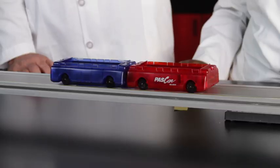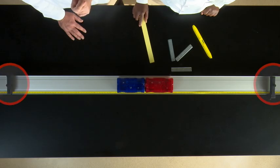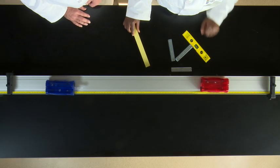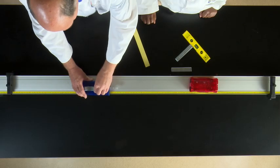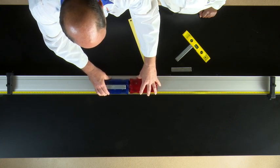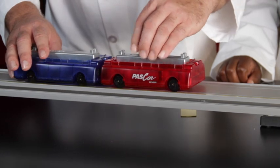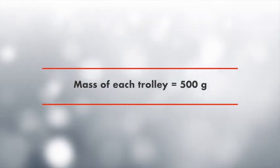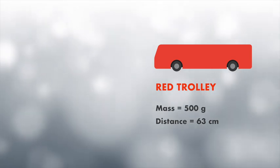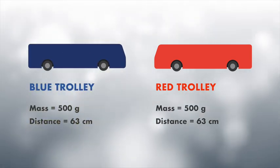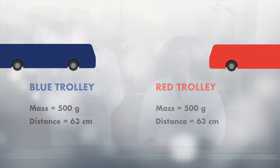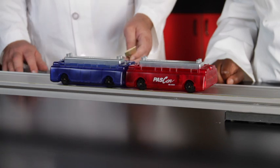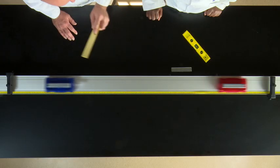Listen carefully — the trolleys must hit their end stoppers at exactly the same moment. Let's try this again, but this time we add a mass piece to each trolley. Remember that each mass piece has the same mass as the trolley — each has a mass of 250 grams. The mass of each trolley is now 500 grams. The distance of the red trolley from its stopper is 63 centimeters and the distance of the blue trolley from its stopper is 63 centimeters. Release the trolleys and listen carefully — they hit the stoppers at exactly the same time.